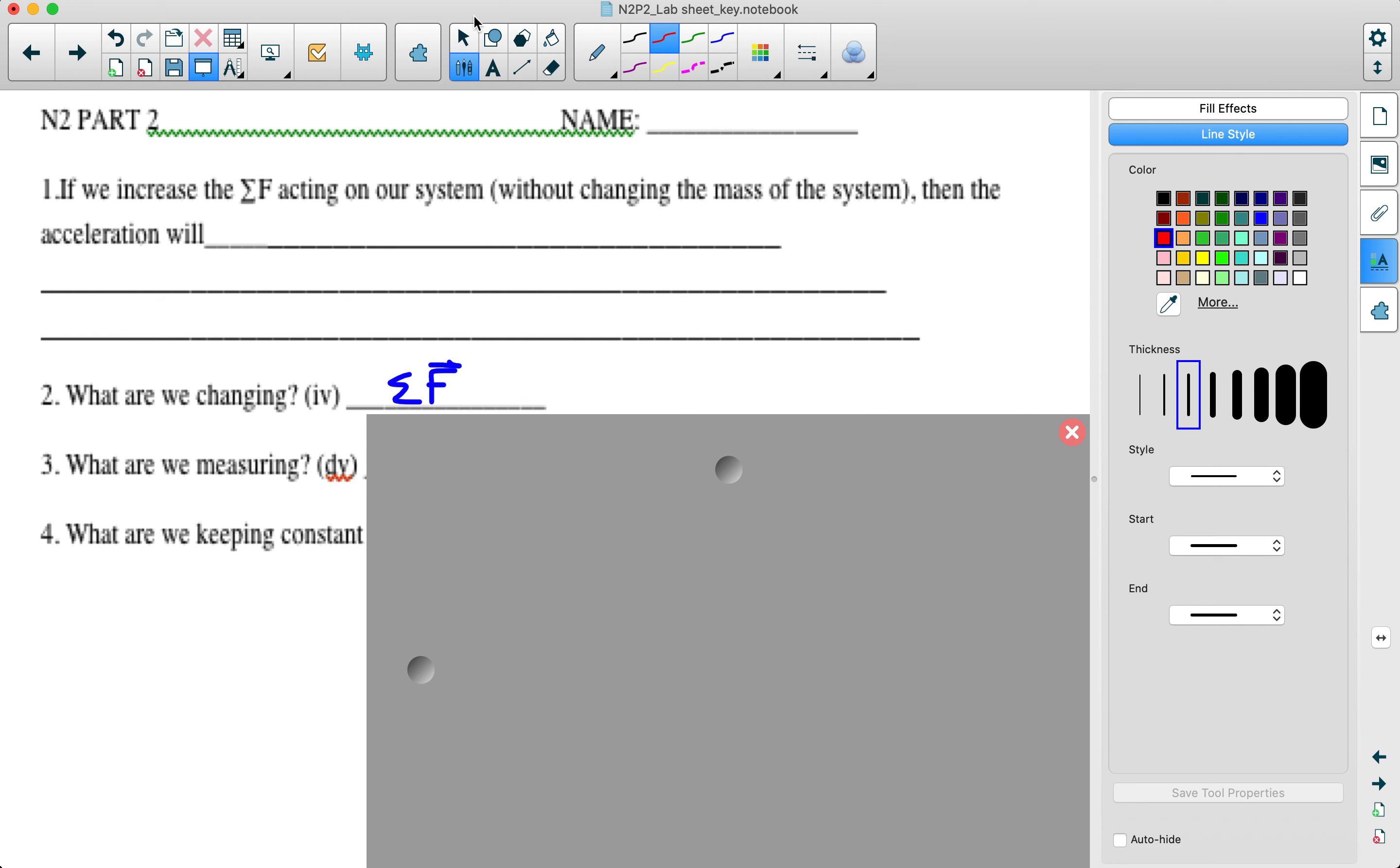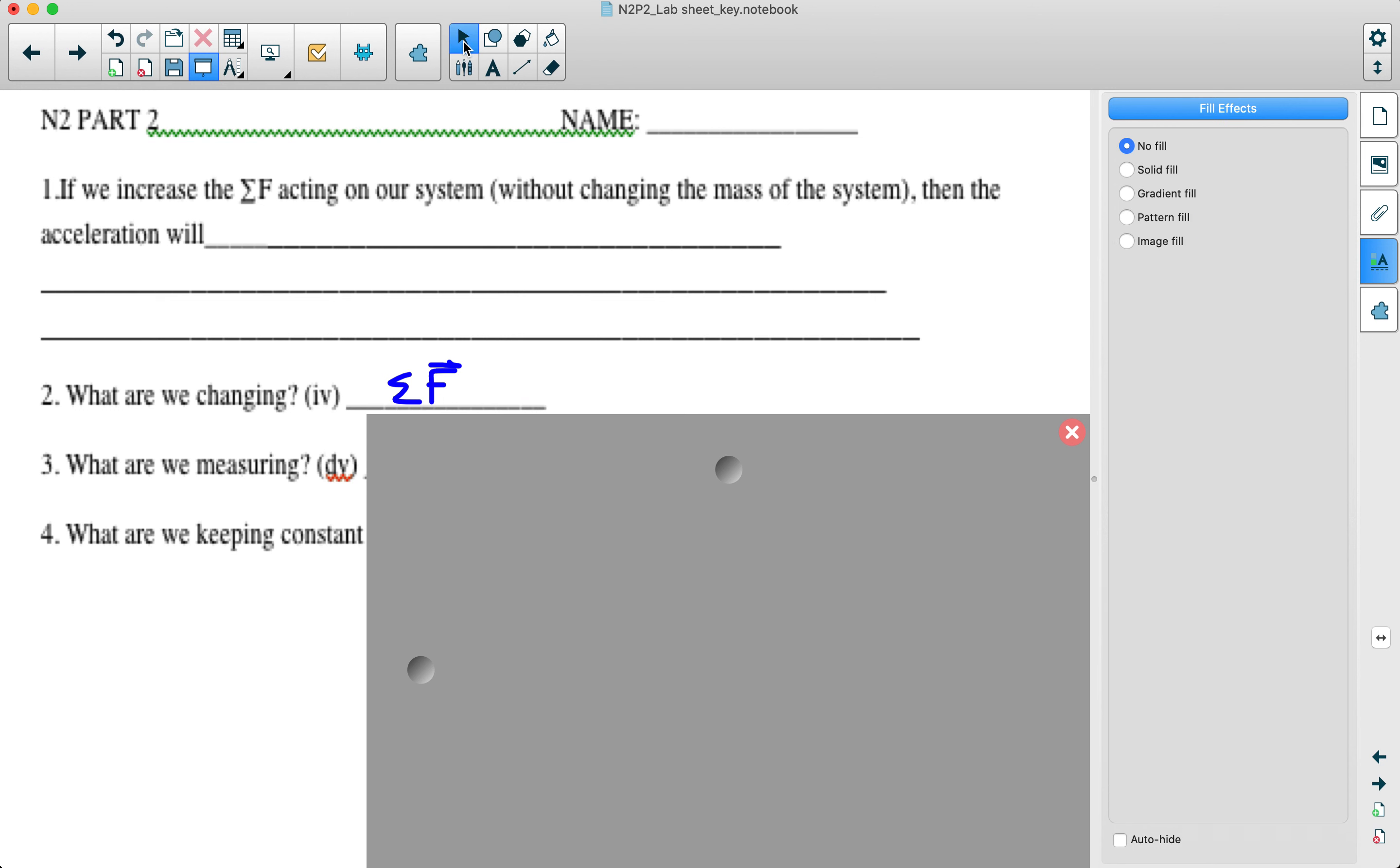Just busting through the data sheet, you should have put your prediction. We said, is the net force acting on the system increases while the mass of the system remains the same than the acceleration would? What are we changing? We're changing the net force. And how are we doing that? We're adding mass to the hanger. What are we measuring after each trial? The rate of acceleration from the slope of the velocity versus time graph from the N2 smart pulley program. And what are we keeping constant? We're not changing the mass of the system.